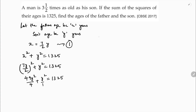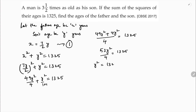If I take LCM, the LCM is 4. So 49Y squared plus 4Y squared — because here is 1, so I need to multiply 4 — giving 53Y squared by 4 equals 1325. So Y squared equals 1325 into 4, divided by 53.